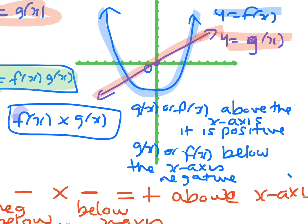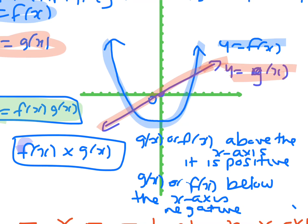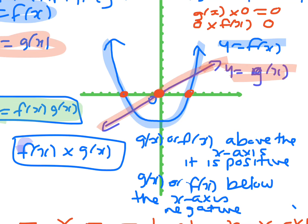Another important property is what happens when you multiply by zero. If you do g of x times zero, you get zero, and zero times f of x is also zero. So anywhere there are x-intercepts will stay the same, because that's like zero times the y-value — you end up with zero.